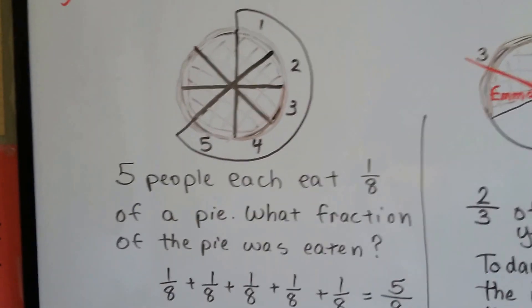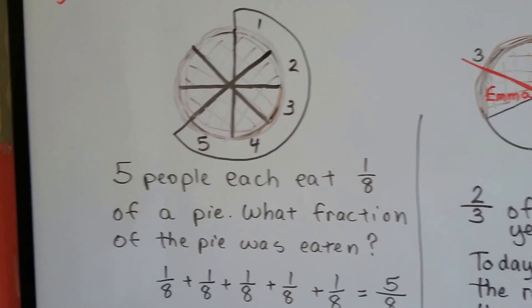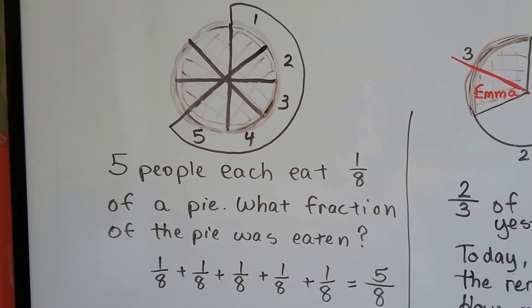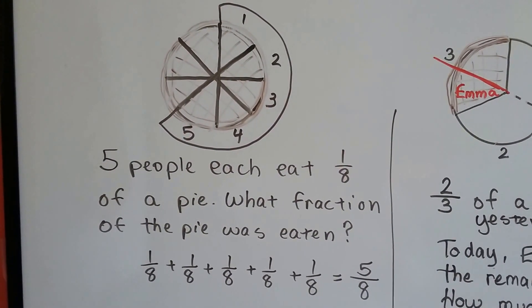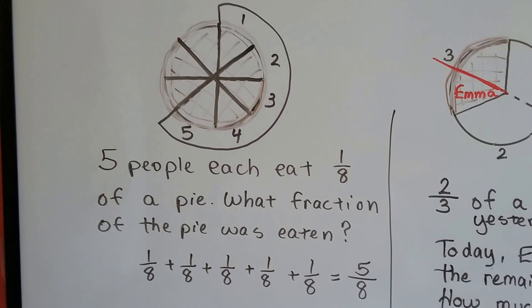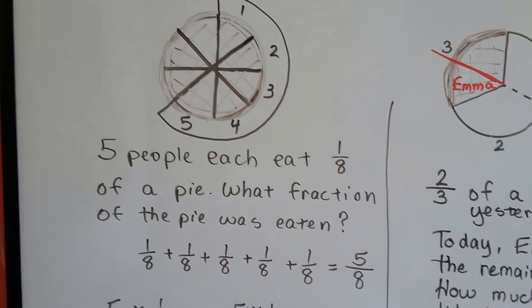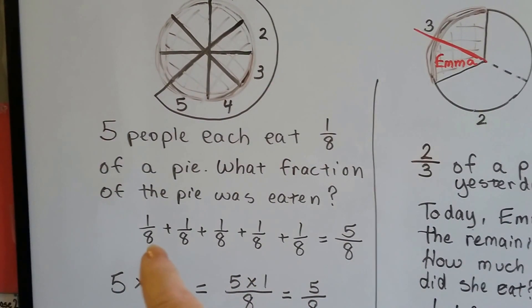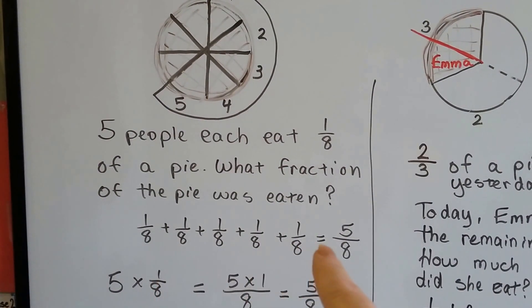If we had a pie cut into 8 pieces, and 5 people each eat 1/8 of the pie, what fraction of the pie was eaten? Well, they each ate 1/8. There were 5 of them. 5 times 1/8 is 5/8. It would be like counting 1/8 five times and adding them up.